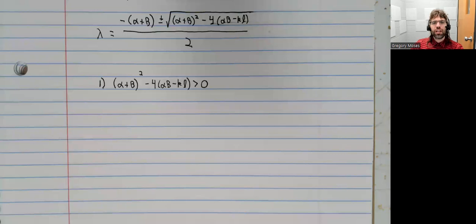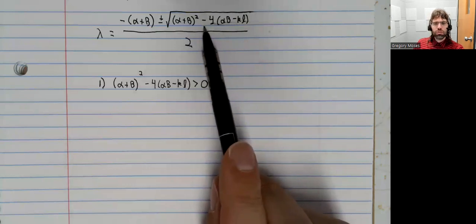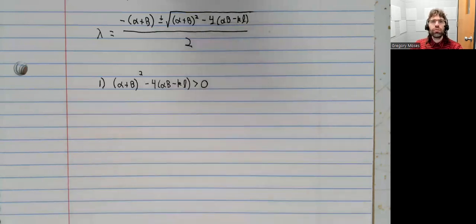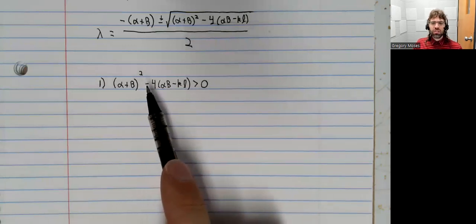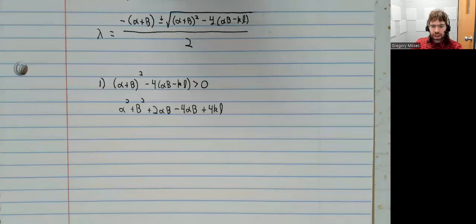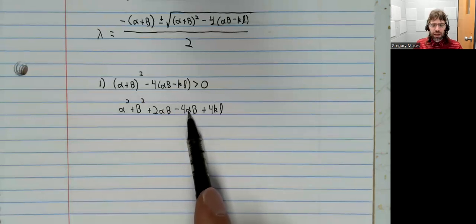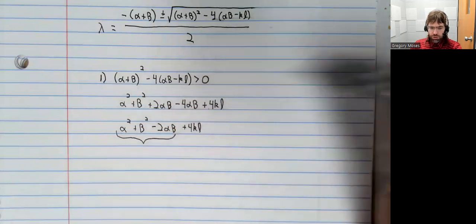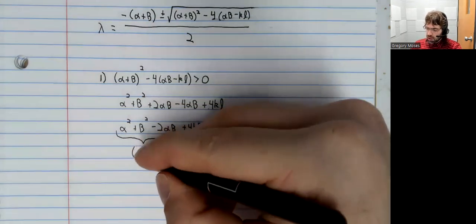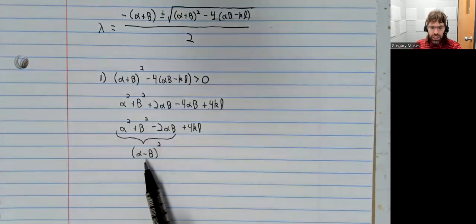The first observation we're going to make is that this thing under the square root is positive. So we have two real eigenvalues. And the way we're going to see this is as follows. Take this expression, foil everything out. This term and this term combines. These three terms together are a square.